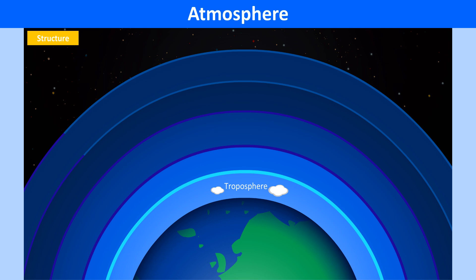The troposphere extends from the surface of the Earth to an altitude of up to 17 km. The stratosphere is the region with the ozone layer, which absorbs the harmful ultraviolet rays of the sun and prevents them from reaching us. Temperature increases with height in this layer. The stratosphere extends from the troposphere to altitudes ranging from 17 km to 50 km above sea level.